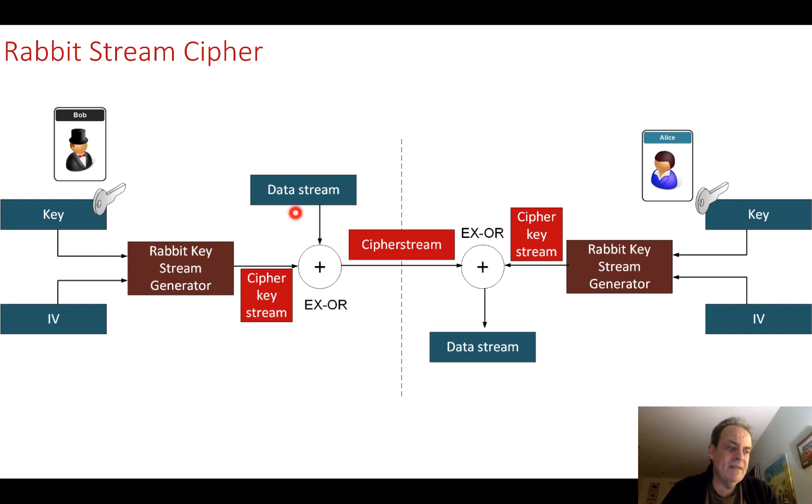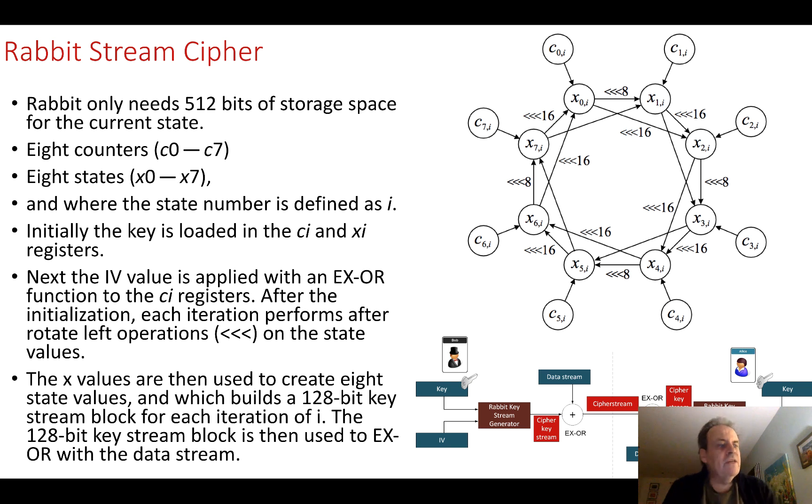This is what the Rabbit stream cipher looks like. We only need about 512 bits internally to store the current state, so the state will iterate each time. The more and more data that we need will increment the state number. We have eight counters here and we have eight state values, which are the x values. We define the current state number as i. We go through a sequence here—this is the shift or the rotate left for the bits—and they get moved. After each of these moves, we'll end up with 128 bits of the key that can be XOR'd.